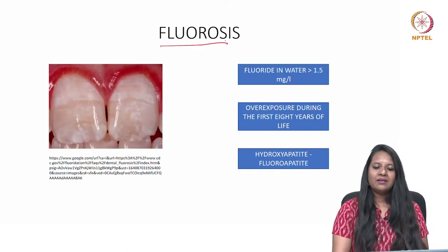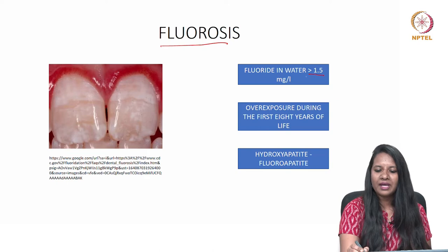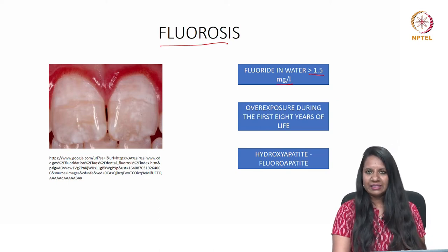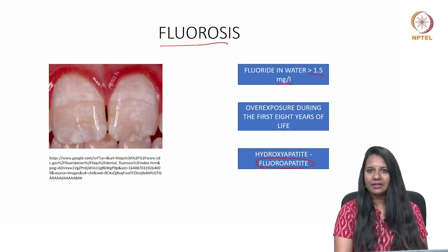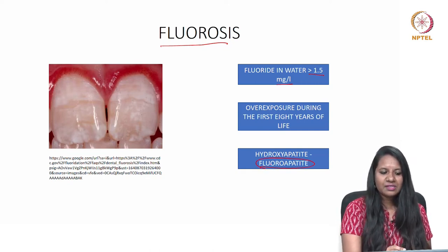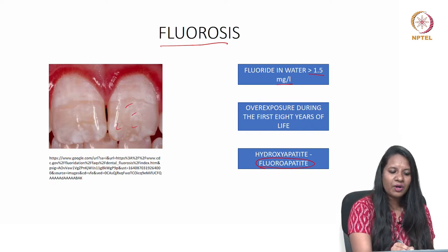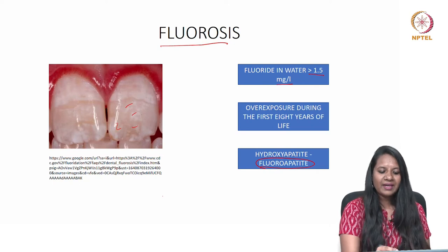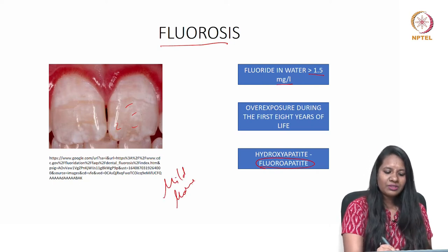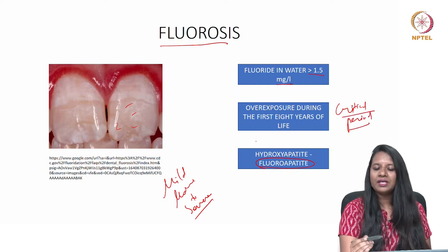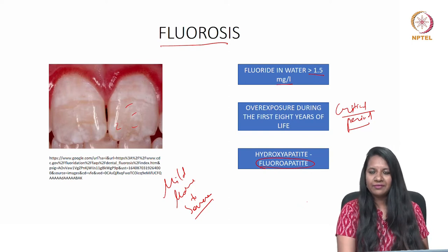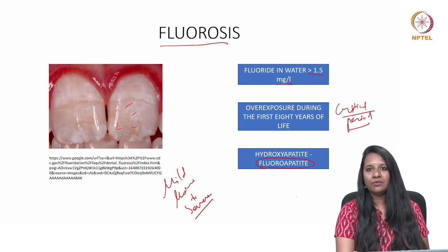Fluorosis: when fluoride in water exceeds more than 1.5 milligrams per litre, fluorapatite forms rather than hydroxyapatite. Fluorosis appears as white patches or brownish patches on the teeth, varying from mild to moderate to severe. The critical period is the first 8 years of life — when a child is overexposed to fluoride during this period, there is a higher chance of developing fluorosis.